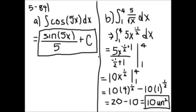For part 5-84, it's asking us to evaluate the following integrals without a calculator. Part A is the integral of cosine 5x dx. You take the antiderivative of cosine of 5x, which is sine of 5x over 5, then add plus C.